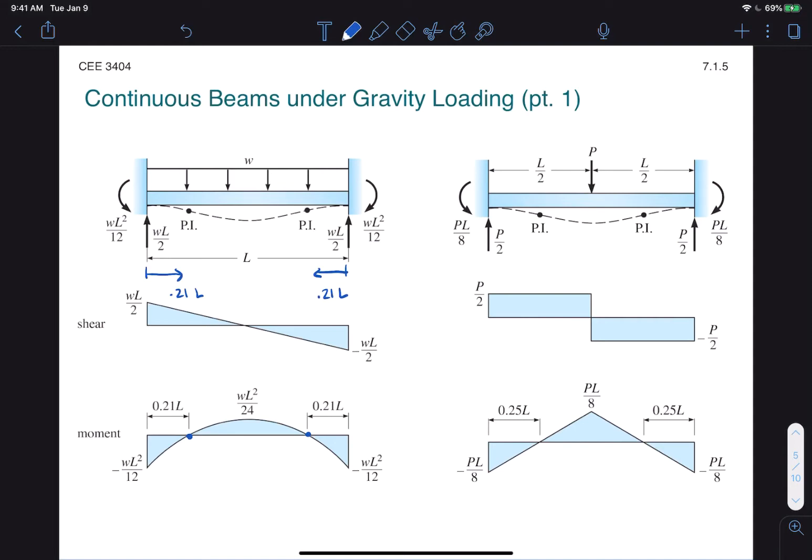For the same beam but with a point load at the center, we can use the force method to solve for the moment diagram at the bottom and then find the zero points of that moment and we'll notice that now it's a quarter of the length from either end. It's good to notice the effect of going from a distributed load to a central point load - it forces the points of inflection to actually move inward.